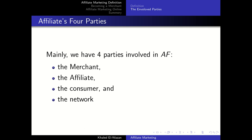There are four parties involved in affiliate marketing. First, the merchant — sometimes also known as the creator, the seller, the brand, the retailer, or even the vendor. This is the party that creates the product. It can be a big company like Dyson who produces vacuum cleaners, or it can be a single individual like Maria Koz who sells online courses to female entrepreneurs.